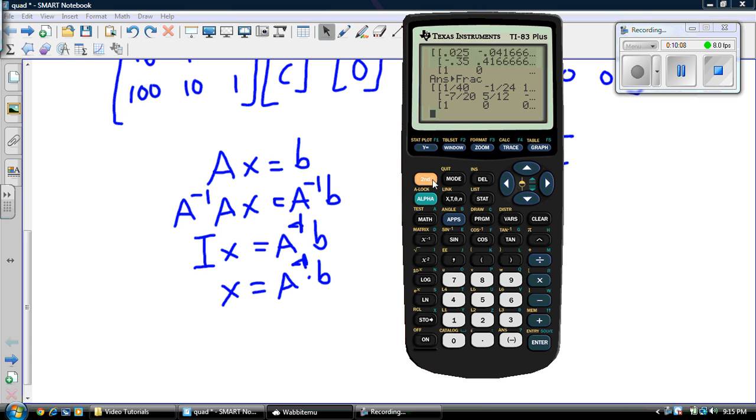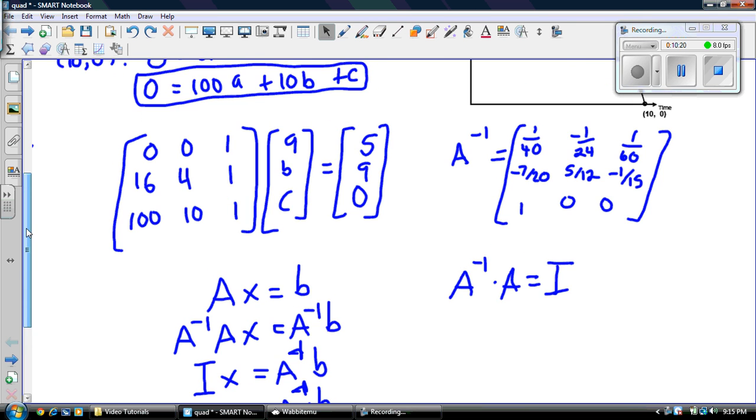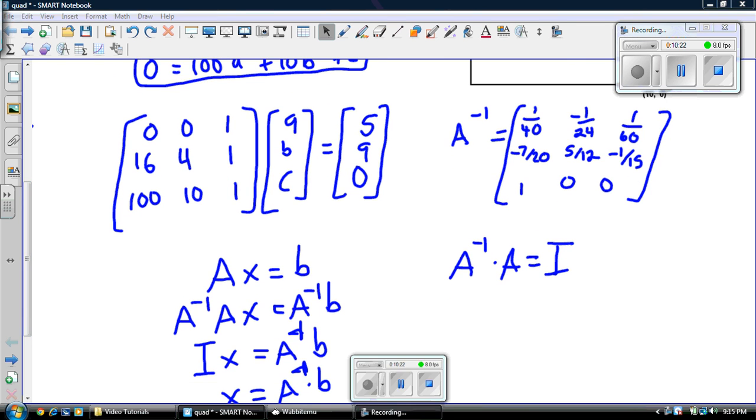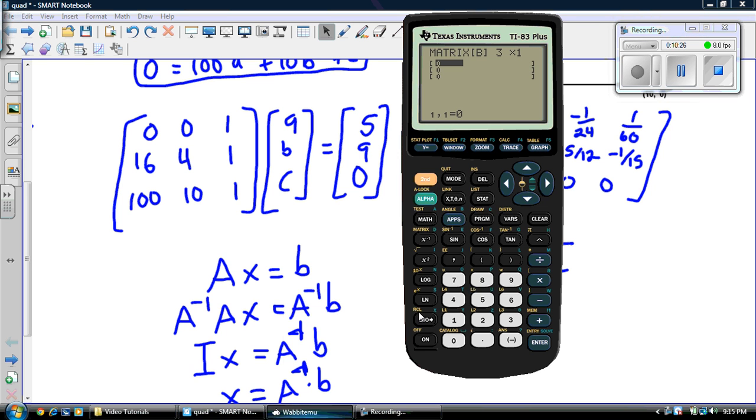We go second function matrix. So, this time we have to put our B in there. So, I'm going to go over to edit again and go down to B. And I'm going to put a 3 by 1 matrix in there. And my constant matrix B, of course, is 5, 9, 0.